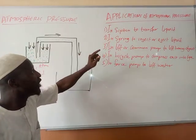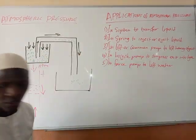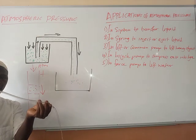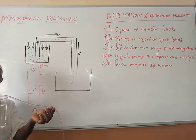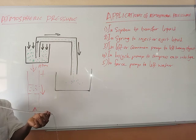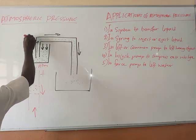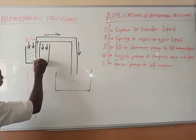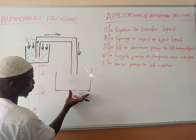I have five of them here. The first one is, it is applicable in a siphon to transfer liquid. For instance, water is dropping. If water is more than this, it will continue dropping. Which shows that there is certain pressure pressing water downward. We have atmospheric pressure here pressing the water downward, and that pressure will force the water in through the pipe, and water will come down for you to use another container to collect it.